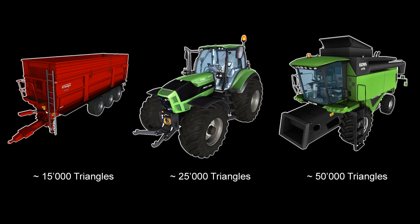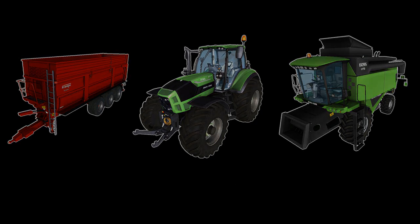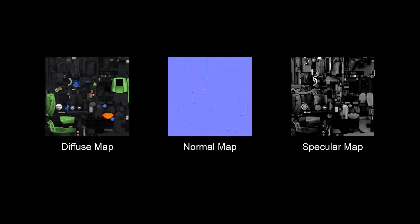That means, with a few exceptions, every model should have exactly one material, consisting of a diffuse map, normal map, and if required, a specular map.